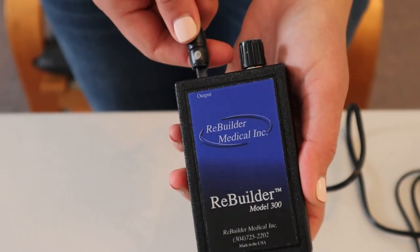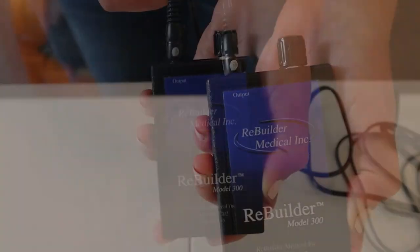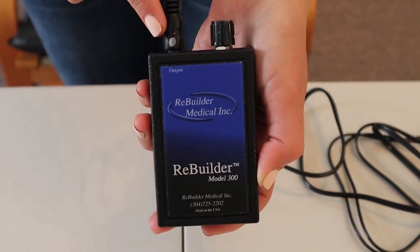Take the lead wire and insert it completely in the input jack of the Rebuilder. The silver indicator will be facing the front of the unit.